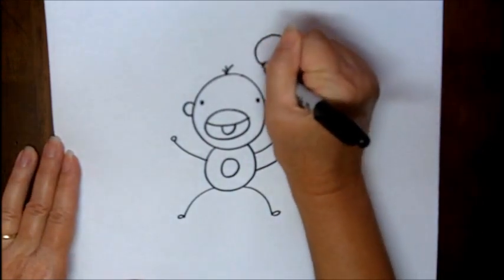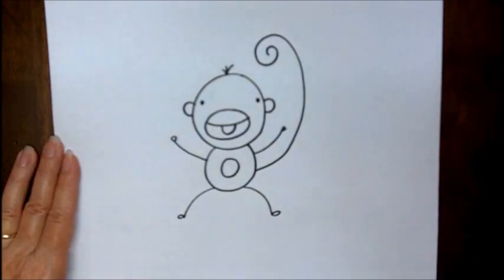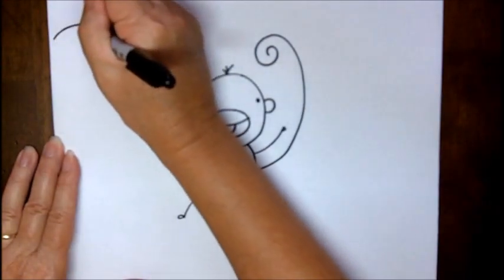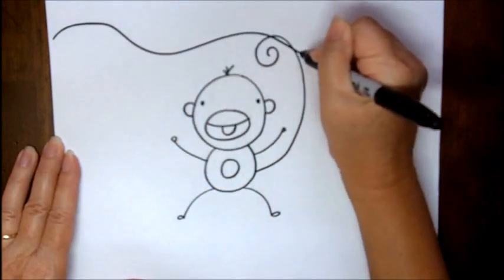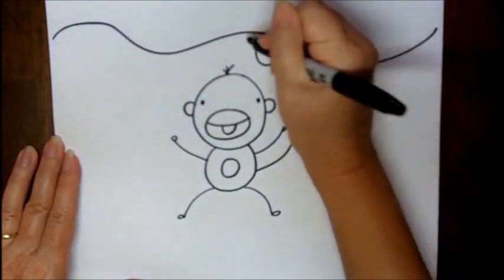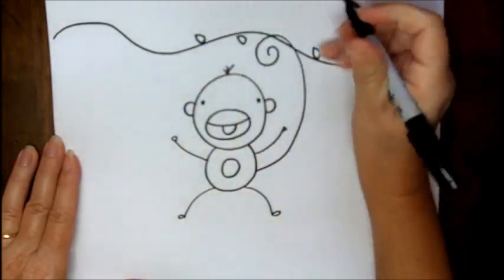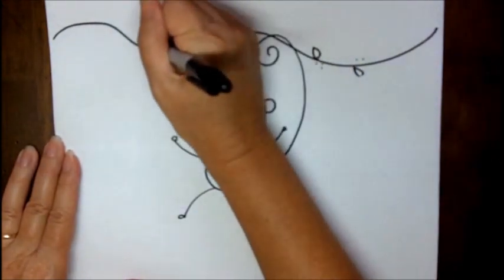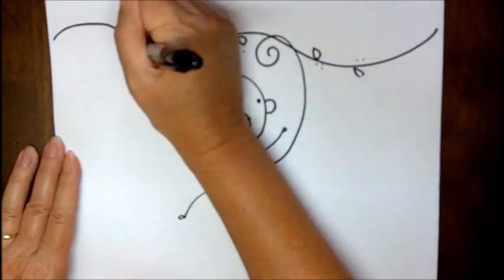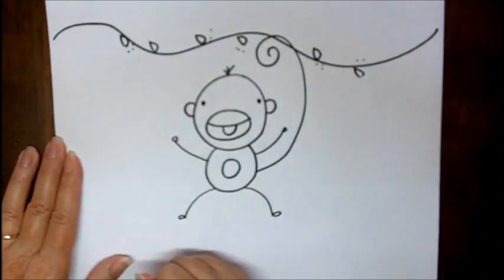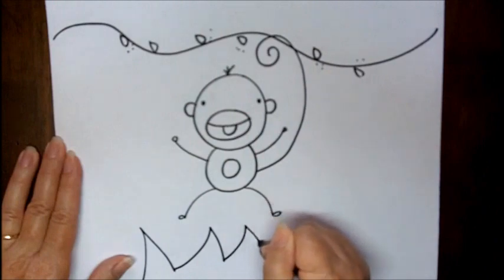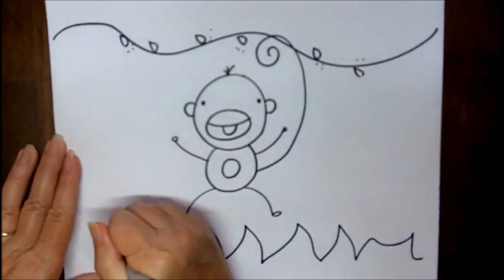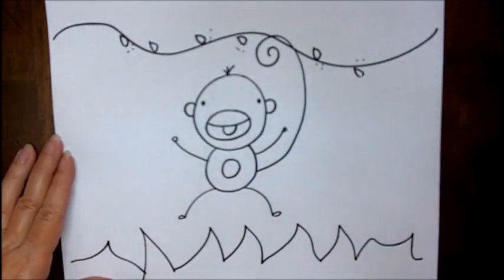get kind of curved, swirly at the end. There you go. If you want to put some little vines, that's always fun with some leaves. Let's dress it up, maybe at the bottom put some little jungle leaves as well. There you go, there's your monkey.